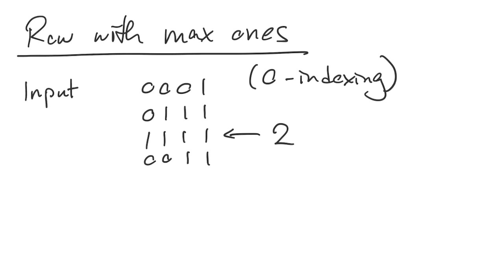The question is to find an algorithm that will return this row given this input. One important feature of this matrix is that the rows are sorted — all the zeros come before all the ones. In the first video we didn't make use of this, but if an interviewer tells you something is sorted, you're probably going to take advantage of that information somehow. In this lecture we're going to attempt to do exactly that.